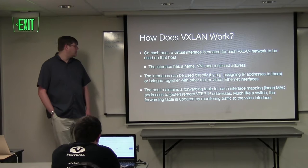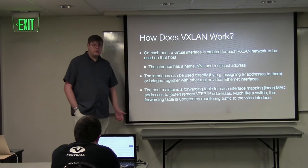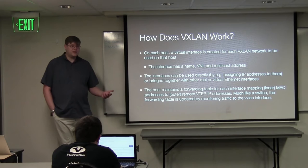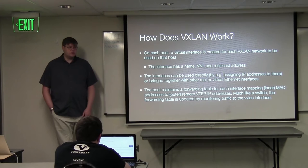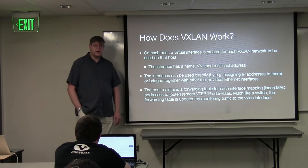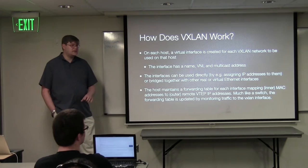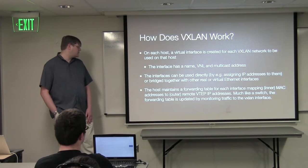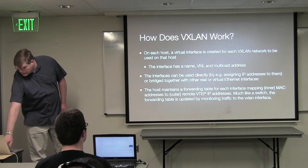You give it a name, a VNI, and the multicast group address, and it's just there. You can do it once or a dozen times, depending on how many networks you want. Once it's up, you can use it like any other Ethernet-like interface. You could put an IP on it directly if you want the host to participate in the network, or if you're doing virtualization, just add it to a bridge or a virtual switch — it's just part of your network plumbing at that layer. The forwarding table we mentioned — the MAC address destination (inner) and the IP address destination (outer) — gets cached, so we don't need to continually send to the multicast group once we've seen a destination recently.